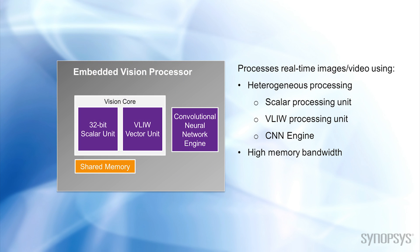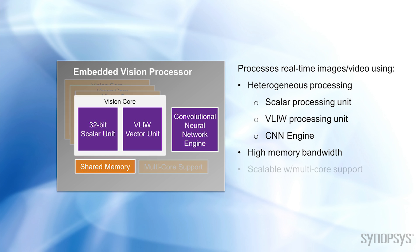Data movement is critical, so these units must be tightly coupled and support fast data transfers. Because vision processing requirements scale with the resolution or number of cameras, some vision processors have the capability of scaling when higher performance is needed. In this case, hardware and software support for high-performance multi-core processing is important.